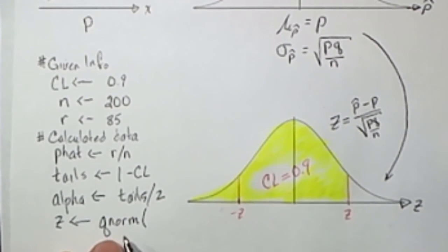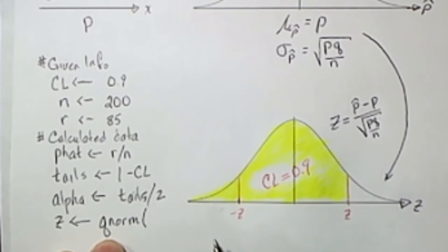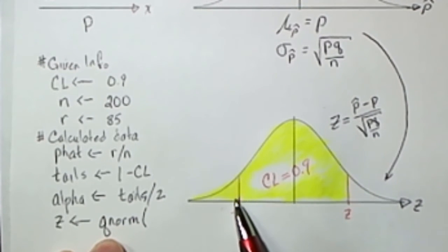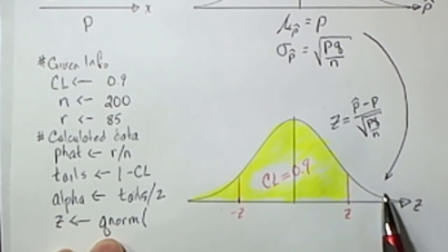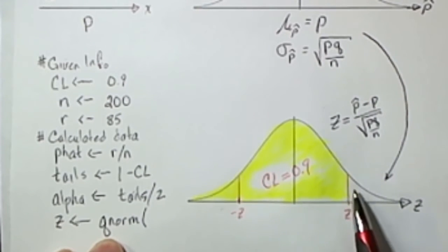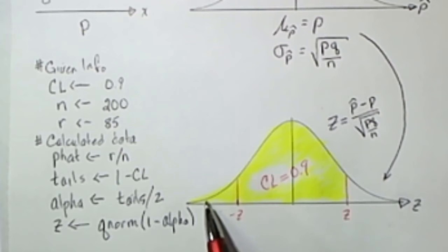So Z is going to be Q norm of this yellow area. There's two ways to find that yellow area. We could take this confidence level which is that area plus alpha. Or we could take the total of 1, 100% and then minus this alpha. In my script I'm using 1 minus alpha to describe this yellow area.